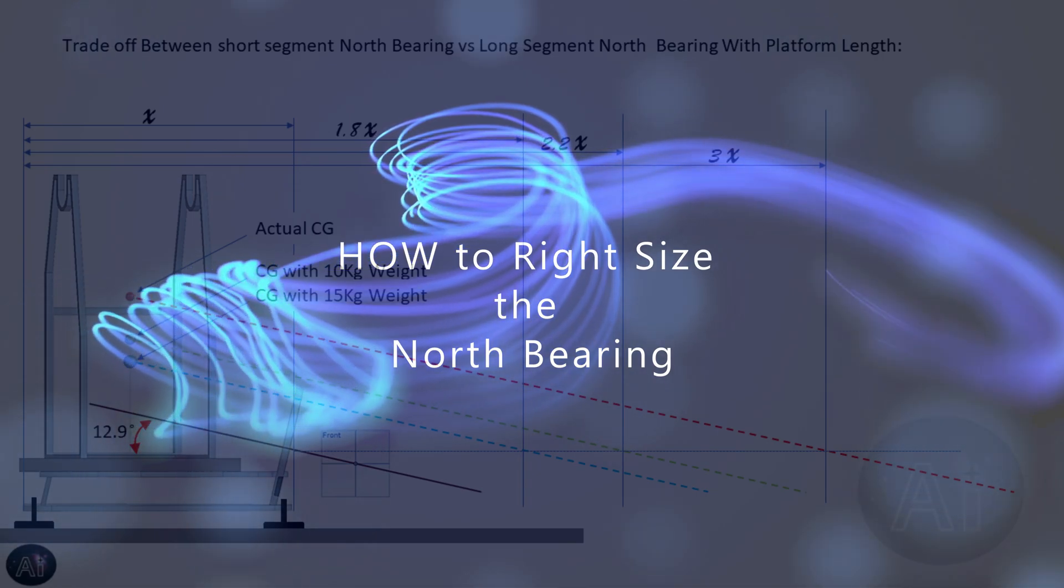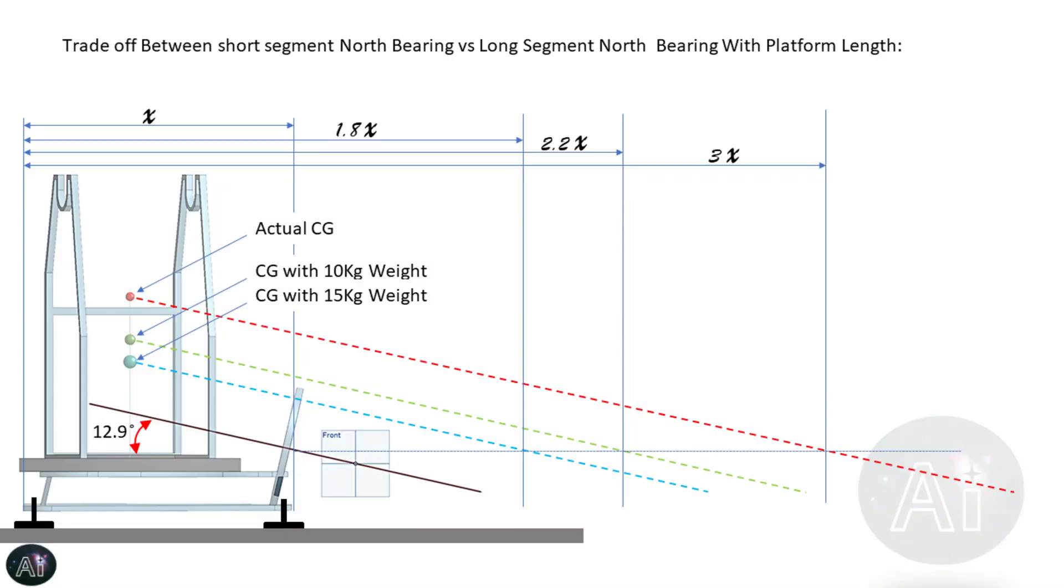As you can see here is a schematic layout of my equatorial platform that we had designed in the previous episode. Here I have drawn parallel latitude elevation from the original center of gravity depicted in red, a reduced center of gravity with 10 kg counterweight depicted in green, and a third center of gravity which is obtained when we put a 15 kilogram of counterweight depicted in blue color.